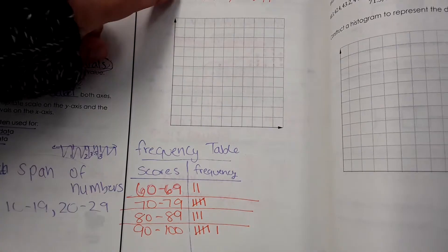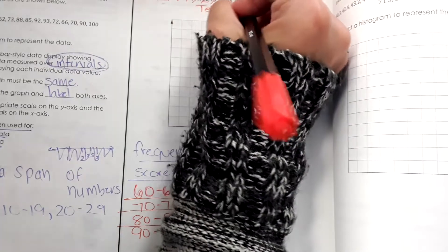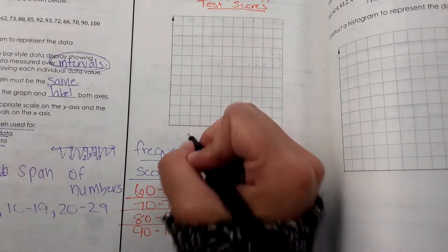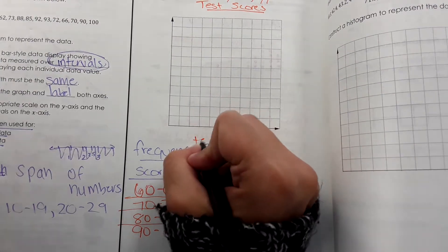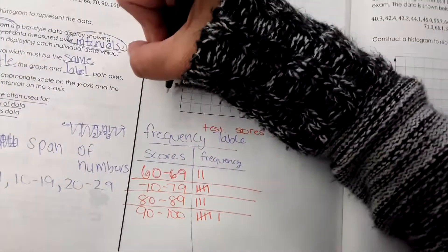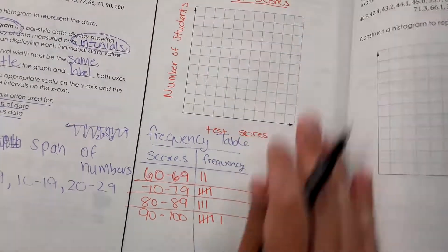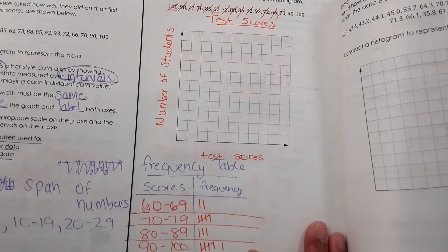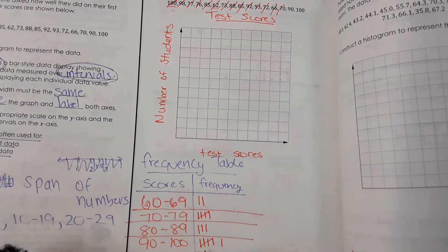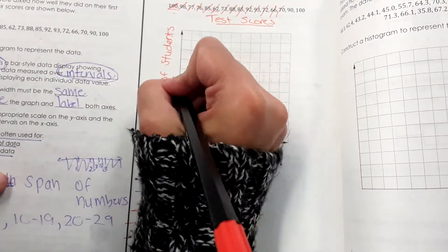So now we have to put it on the actual graph. Our title will be just test scores. The intervals always go on the bottom here. So this will be test scores. And then over here, we're going to do number of students. Okay. So number of students labeling, that's easy. I just need to make sure I go up to six students. Just start at zero though. One, two, three, four, five, six, maybe go one higher.